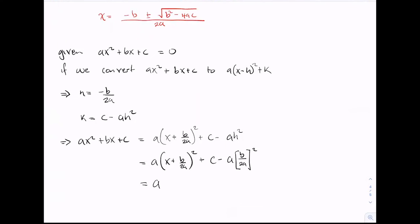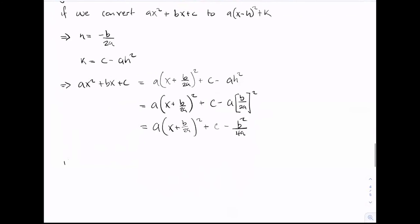Simplifying this gives us a times (x plus b divided by 2a) all squared plus c minus b squared over 4a. Now, going back to the equation: if ax squared plus bx plus c equals zero, this means that a times (x plus b over 2a) all squared plus c minus b squared over 4a equals zero, because I replaced the standard form with the completed square form.